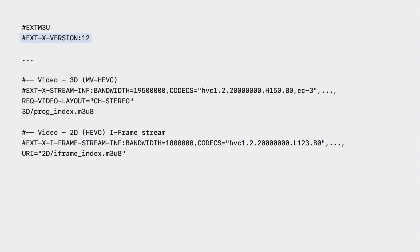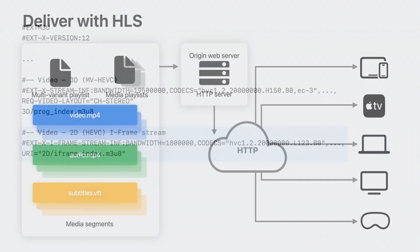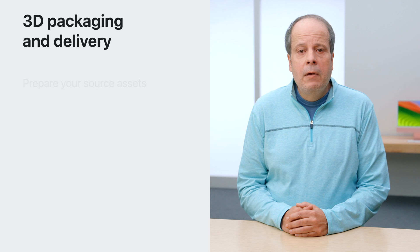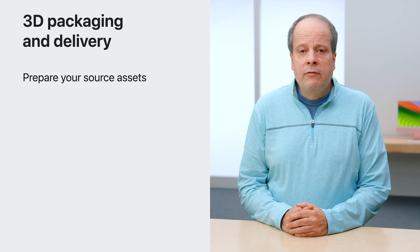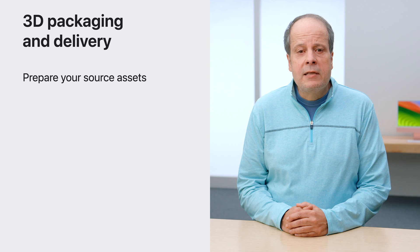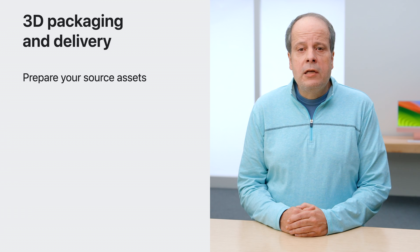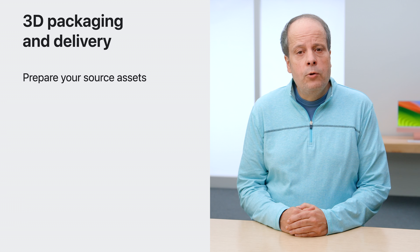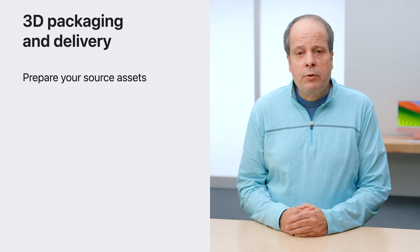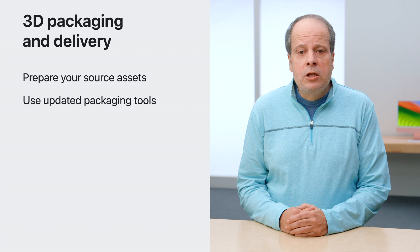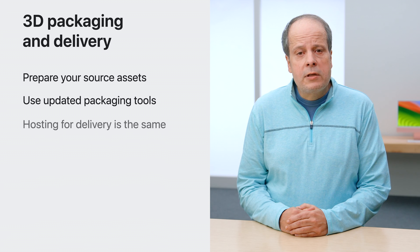Here's an example multivariant playlist with the version number updated to 12 and using REQ-VIDEO-LAYOUT for the 3D video stream. For the best navigation experience, you should include a 2D iframe stream in the multivariant playlist to support thumbnail scrubbing. Finally, HLS delivery works the same with 3D assets. Delivering 3D assets is largely the same as delivering 2D assets, but there are some things you can do to optimize the experience. Prepare your source assets noting to use MV-HEVC for 3D video and including the new parallax contour metadata. Audio and caption production can be the same. Use updated packaging to produce the relevant segments and playlists. Hosting remains the same.